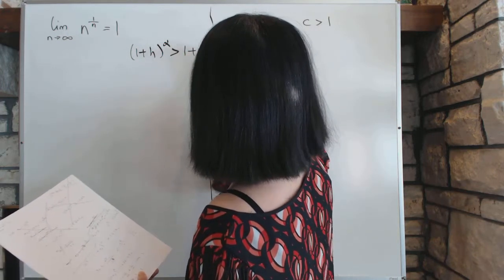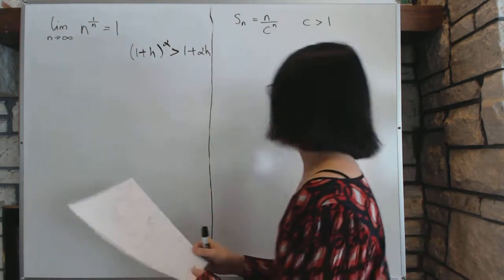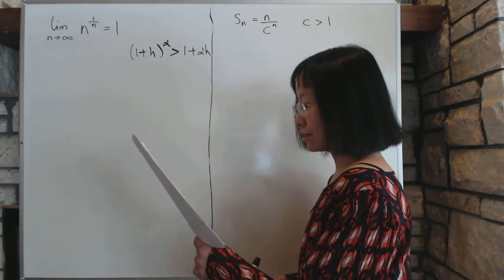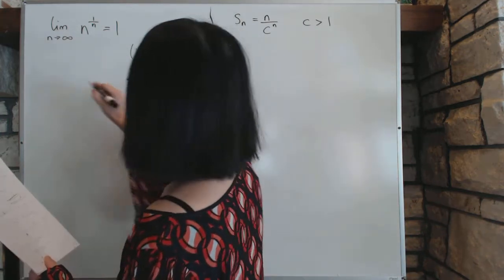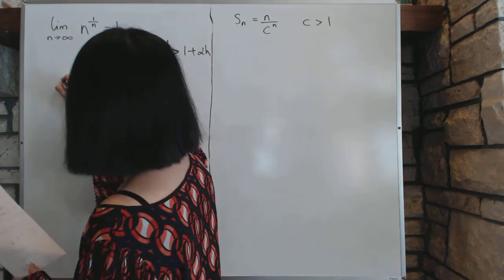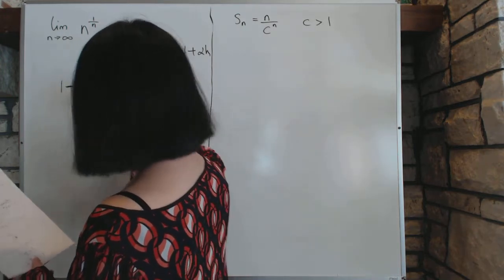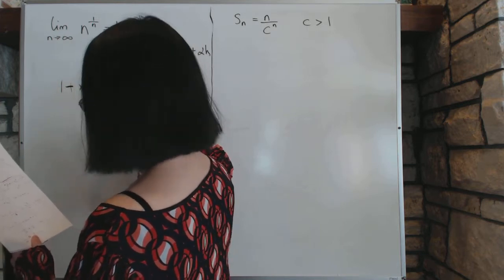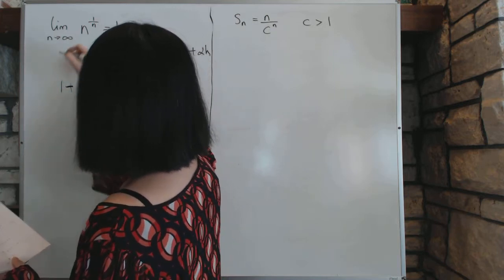So this is simply that, when h is positive. So in order to do that, we're going to pull another trick. We will set something, we'll define xn as this. We'll define 1 plus xn equal to n to the power 1 over 2n.